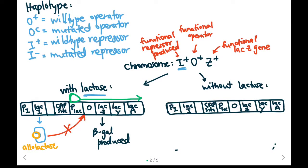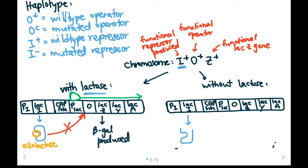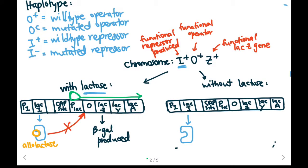Without lactose, our repressor protein is still produced because we do have a functional I-plus gene. We don't have lactose, which means that the repressor protein will be able to bind to the operator because there's nothing that changes its shape. When RNA polymerase binds to the promoter, it's blocked by the repressor protein so it cannot transcribe, which means that beta-galactosidase is not produced.